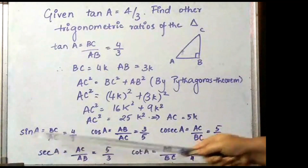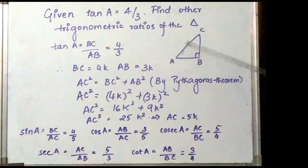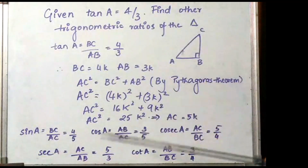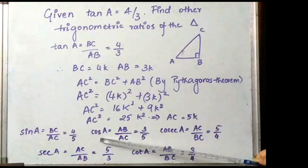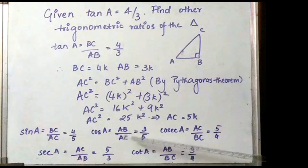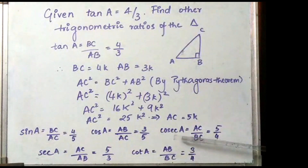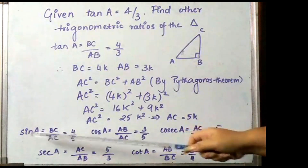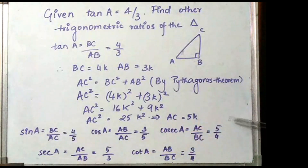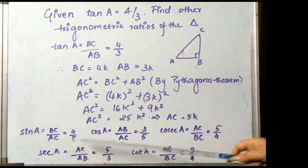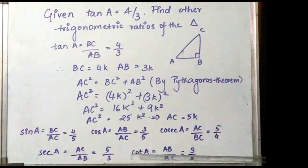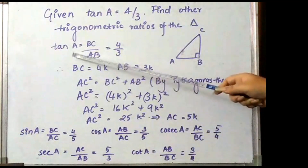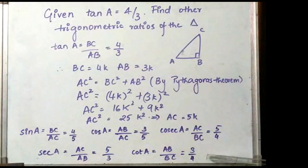Now sin A is the opposite by the hypotenuse, which is BC by AC, which is 4 by 5. Cos A is the adjacent by the hypotenuse, which is AB by AC, which is 3 by 5. Cosecant A is the reciprocal of sin A, which is 5 by 4. Secant A is the reciprocal of cos A, which is 5 by 3, and cot A is the reciprocal of tan A, which is 3 by 4.